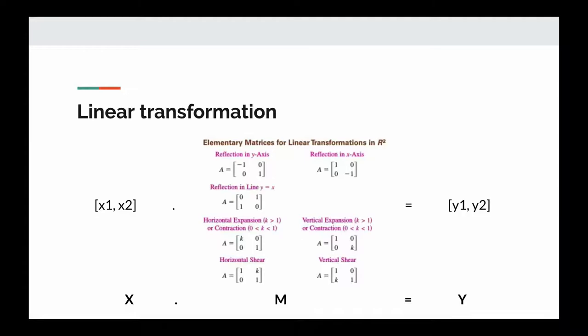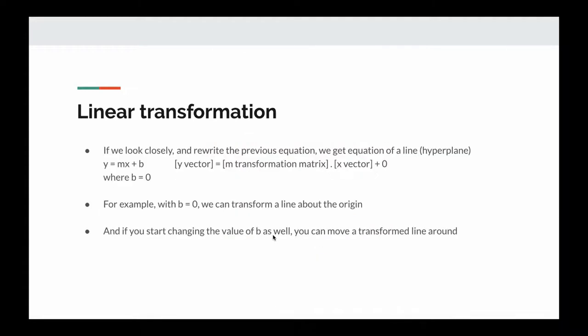Here you can see a programmer-written transformation matrix for computer graphics. It takes a point in 2D space (x1, x2) and transforms it to another point (y1, y2). If we rewrite the previous equation we get the equation of a line: y = mx + b. But it's actually a hyperplane — a hyperplane in 2D space is a line, a hyperplane in 3D space is a plane, and as dimensionality increases we can generalize these as a hyperplane in multi-dimensions.